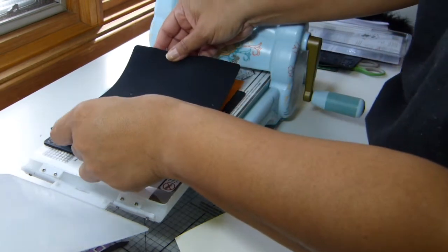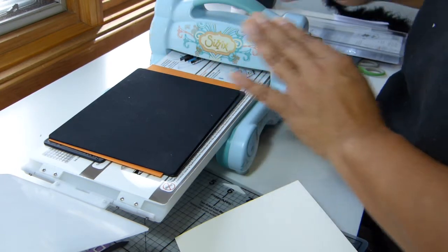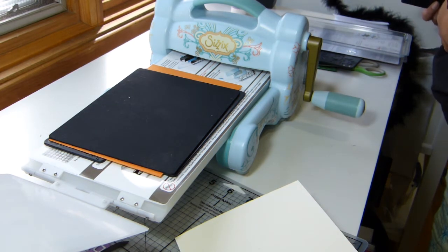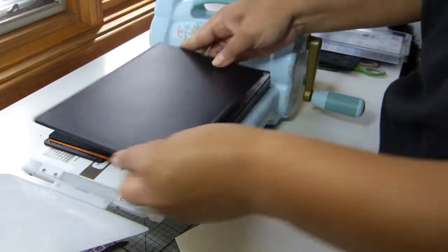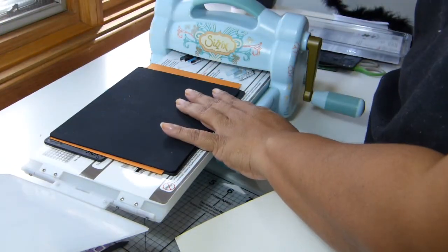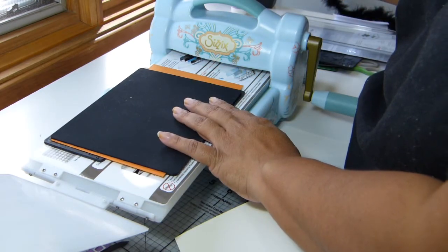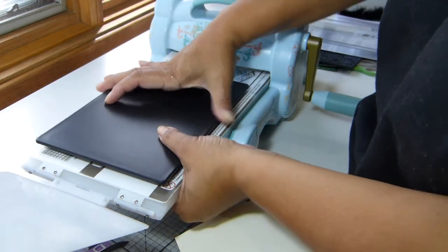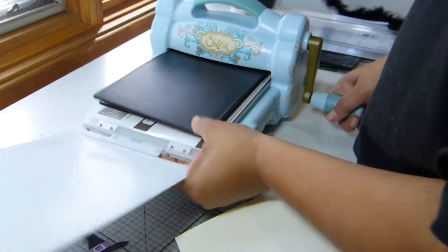And then it says I'm supposed to put the silicone rubber, which comes in the kit. I guess it moved a little bit, but let's pray for the best. And then I'm supposed to put the impression pad. I moved it again. Okay, and then I guess I'm supposed to run it. So let's see if it works.